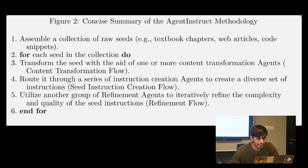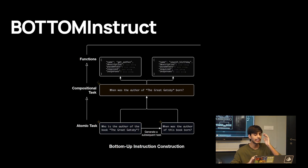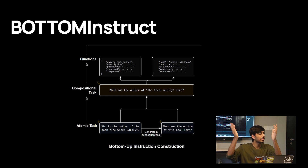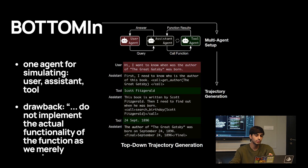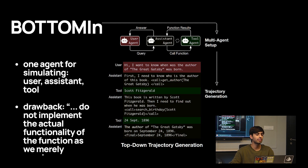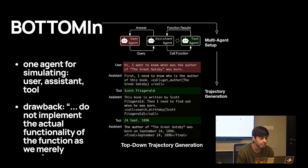Once you have the tool call dataset, you need to convert it into multi-turn conversational data. One paper handles this by starting from tools as atomic tasks, generating simple tool calls like 'who is the author of this book,' then composing them into harder compositional tasks. It uses three agents — a user agent, an assistant agent, and a tool agent — to generate a multi-turn conversation, which is the final format you want to train on.